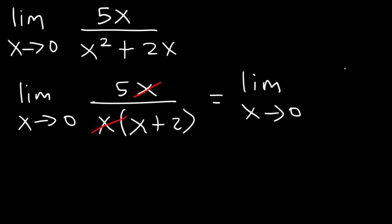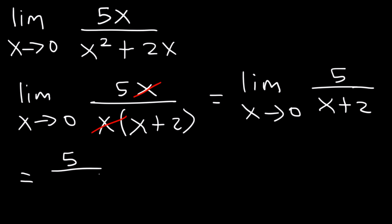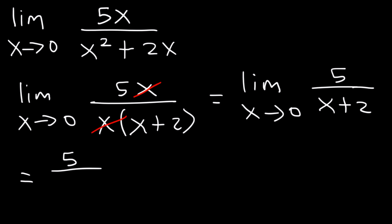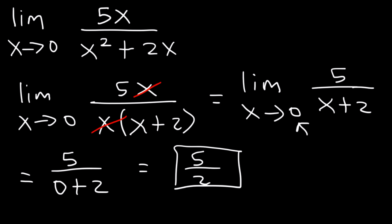We're left with the limit as x approaches 0 of 5 divided by x plus 2. Now we can use direct substitution — replace x with 0. Some teachers require you to rewrite the limit expression until you substitute, but the final answer is 5 divided by 2.